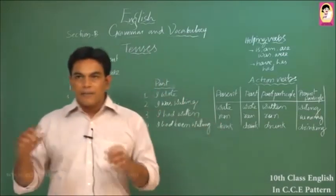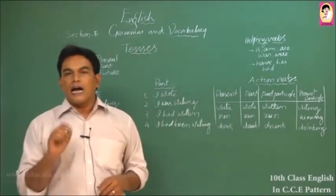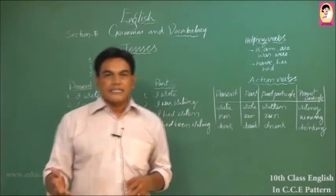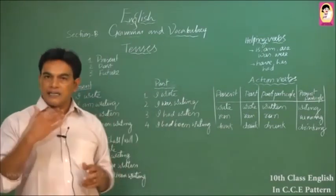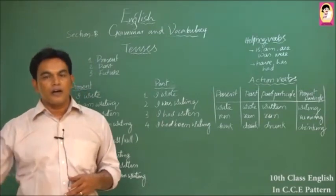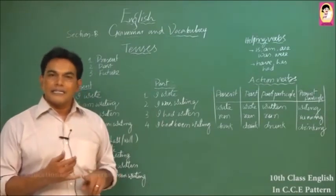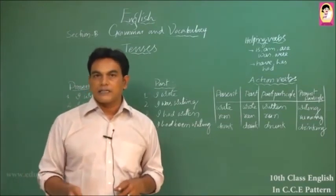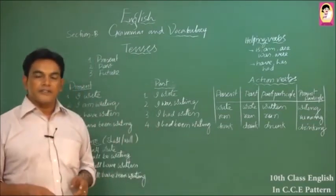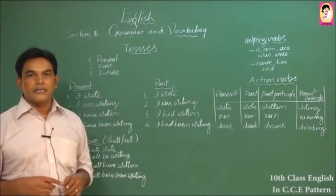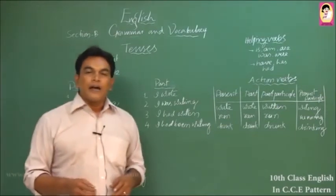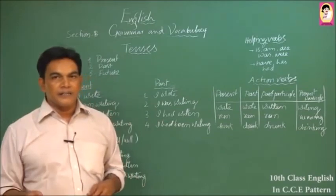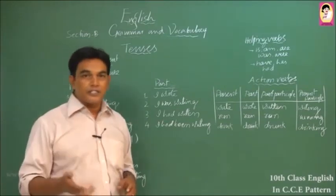For example, take the sentence 'I write a letter' and say it in all twelve tenses: I write a letter — I am writing a letter — I have written a letter — I have been writing a letter — I wrote a letter — I was writing a letter — I had written a letter — I had been writing a letter — I shall write a letter — I shall be writing the letter — I shall have written a letter — I shall have been writing the letter.